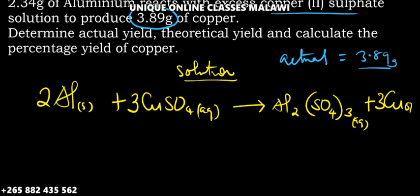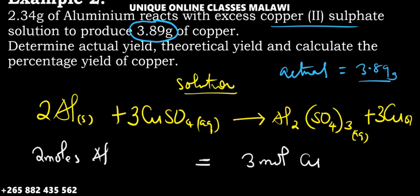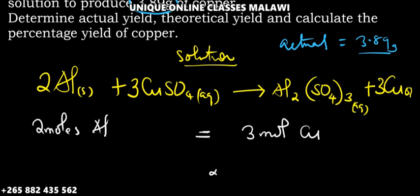For theoretical yield, we need to find the reacting masses on both sides. From the coefficients: 2 moles of aluminum. Aluminum has atomic mass 27. Using number of moles equals mass over molar mass, we get 2 moles times 27 grams per mole equals 54 grams of aluminum.